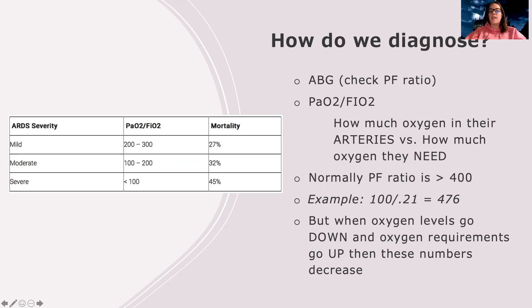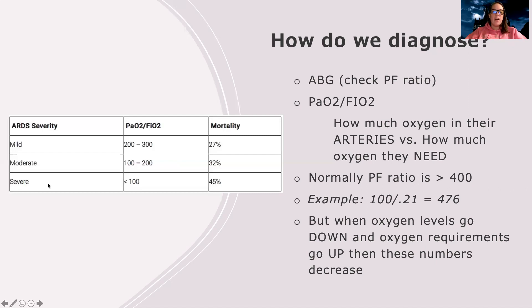You can see how this works: an ARDS patient's PaO2 is going to be low because they're not getting oxygen, and the amount of oxygen they need is going to be high because we're giving them a lot but their levels are still low. When PaO2 goes down and oxygen requirements go up, the PF ratio decreases. Severe ARDS is a PF ratio less than 100, moderate is 100–200, and mild is 200–300. This has very high morbidity and mortality if not caught and treated early.